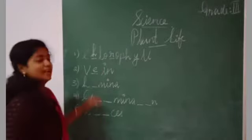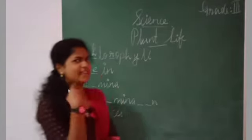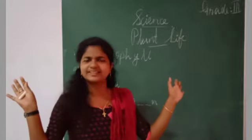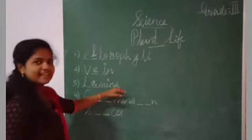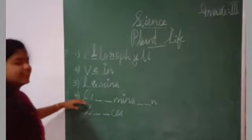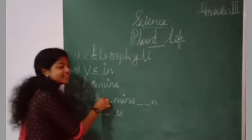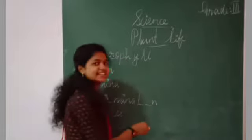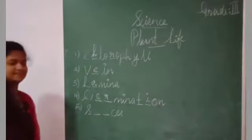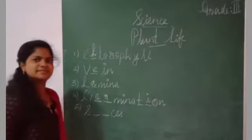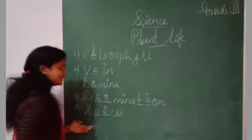Then next, V-E-I-N. Yes, very good, vein. Right? Yes, vein. Then L-A-M-I-N-A. What's the answer? Louder. Yes, very good, A. Lamina. Yes, lamina. Next one, germination. Right? Yes. Germination. Then here, yes. Species. Yes, very good. Species.